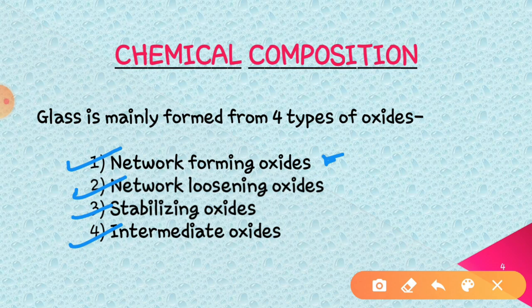Network loosening oxides are also termed as modifiers because they modify the quality of glass evidence, as they are used for reducing the melting point of glass. These oxides include calcium oxide, magnesium oxide, barium oxide, and lithium dioxide, etc.